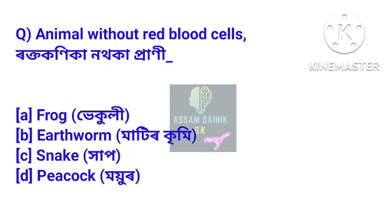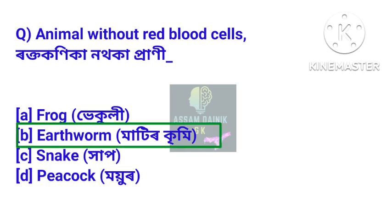Animal without red blood cells — roktokonika nothoka prani. Answer: earthworm. Matir creamy. Roktokonika nothoka prani bit hole matir creamy.